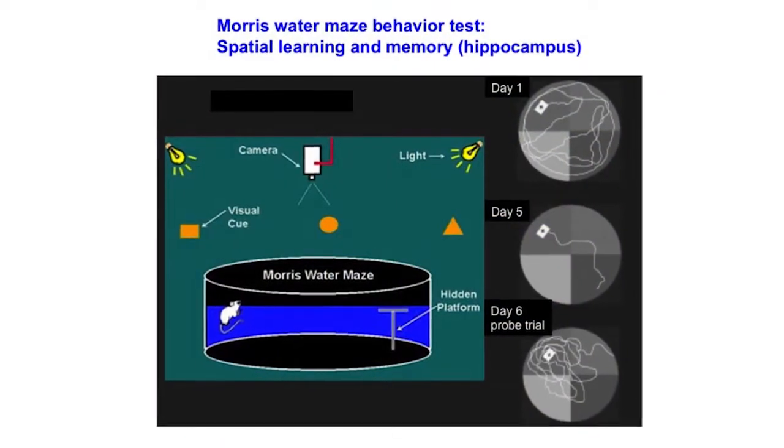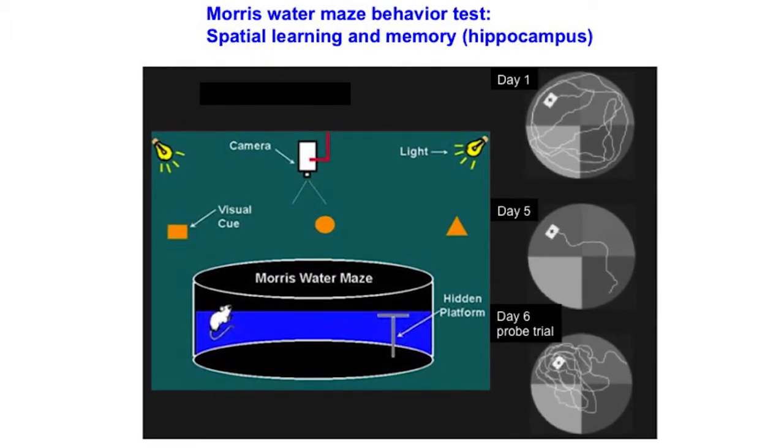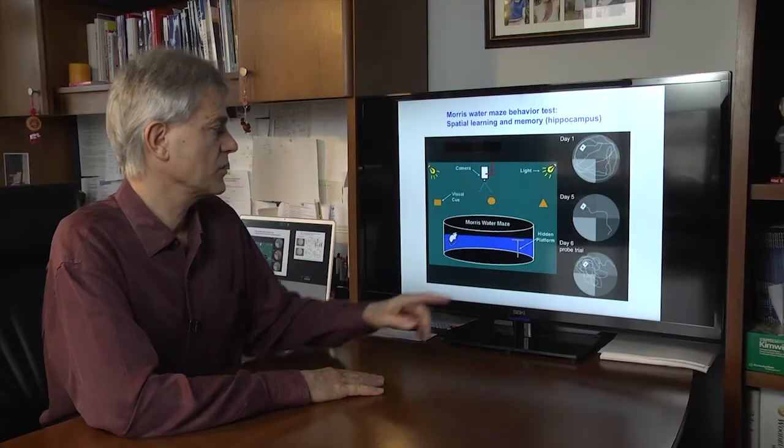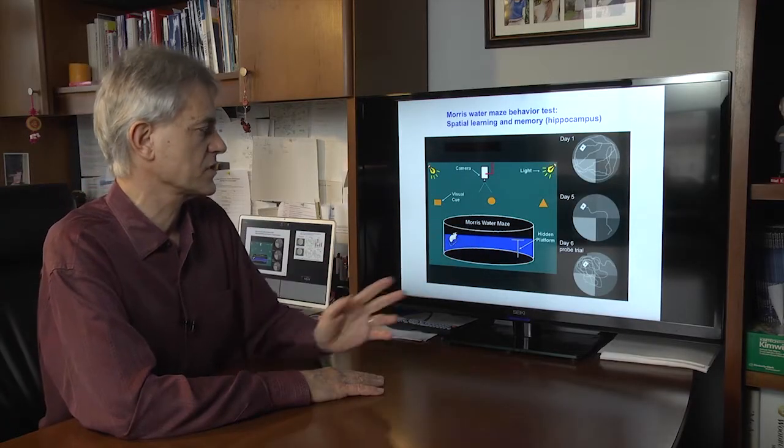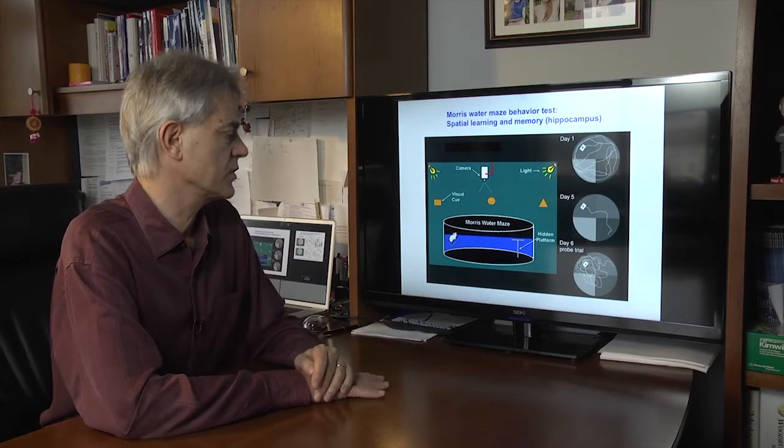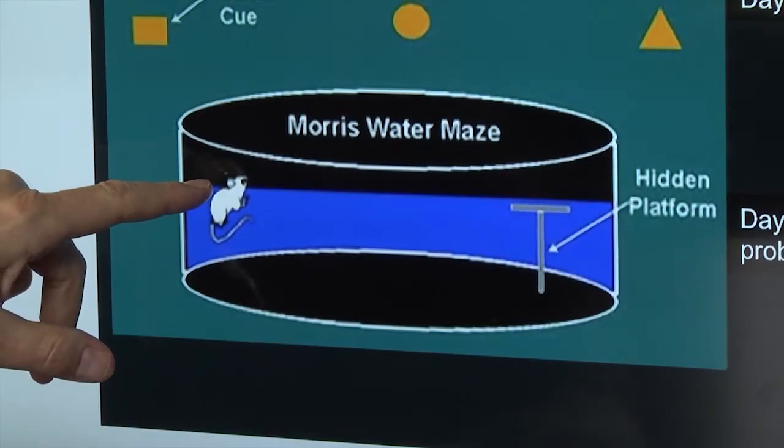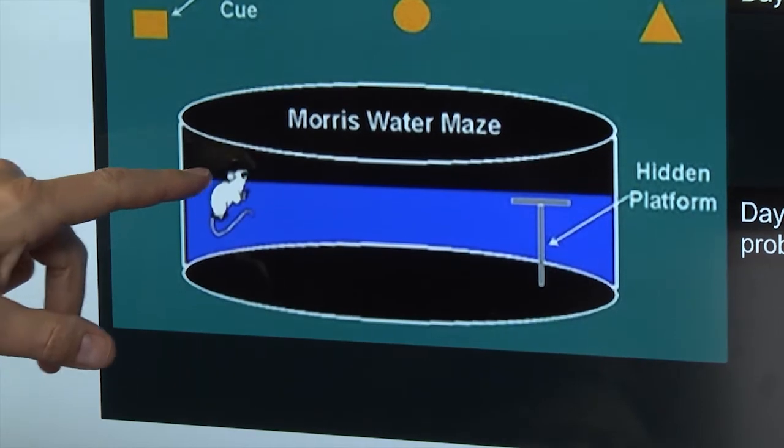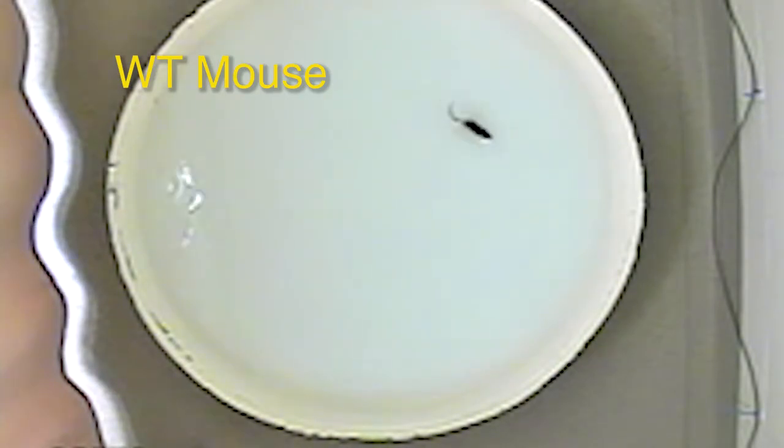One of the tests used in research is the Morris Water Maze. It consists of a kiddie pool filled with water that's the color of milk, so it's not transparent. A mouse is dropped in the pool and has to randomly swim until it finds a hidden platform. Every day the mouse will get a little bit better at finding the hidden platform because it will remember where it is located in relation to visual cues.